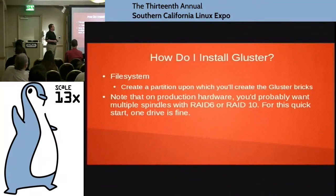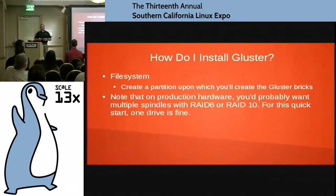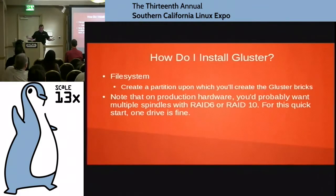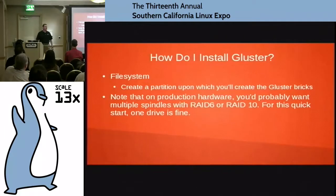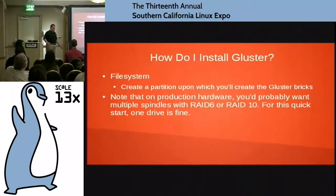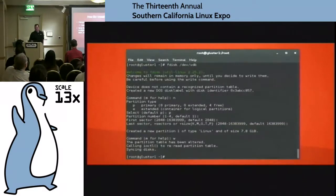First steps: we need to create a partition upon which you will create the Gluster bricks. In the real world, you're going to use inexpensive commodity hardware servers. We would recommend some sort of redundancy at the server level — you're going to want to run a RAID 6 array or RAID 10. RAID 5 is going to take a performance hit; RAID 6 seems to be a little bit faster. For this demo, I'm just using simple VMs with simple partitions.